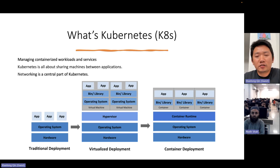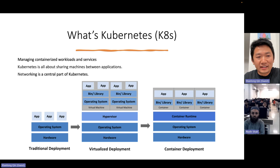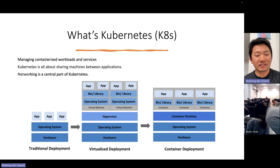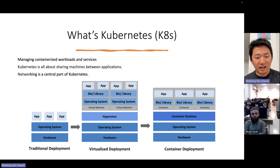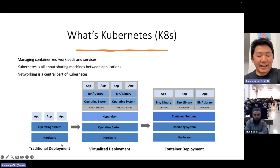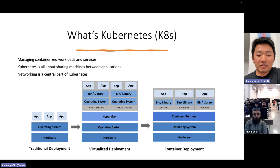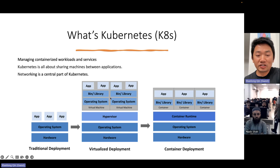Before I talk about Kubernetes networking, let me go through some basics about Kubernetes. Basically, Kubernetes is about managing containerized workloads and services. It is all about sharing machines between applications. Traditionally, we ran all applications on operating systems on hardware. After that, we had hypervisors like QEMU, KVM, and GEM. On top of the hypervisors, we built virtual machines, and on the virtual machines we had operating systems and ran the application on top of that.